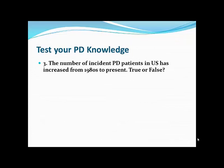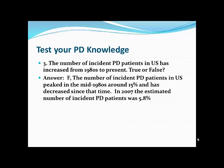The number of incident peritoneal dialysis patients in the US has increased from the 1980s to the present — true or false? It's actually false. In the 1980s, when PD was made safer, the incidence of patients selecting peritoneal dialysis as their start modality was highest, around 15%. Since then it has been slowly declining. As of 2007, the percentage selecting PD as their start modality is slightly less than 6%.